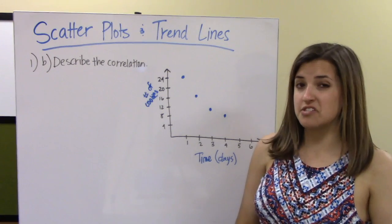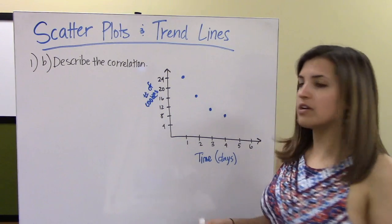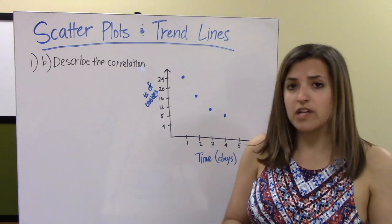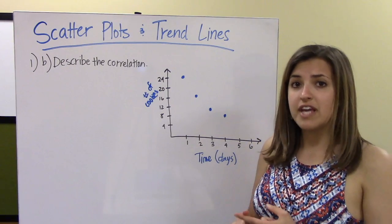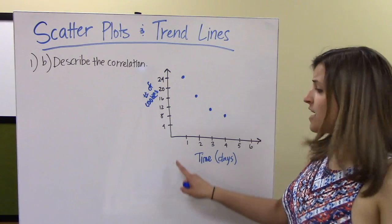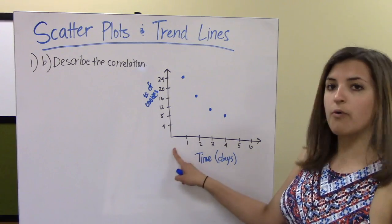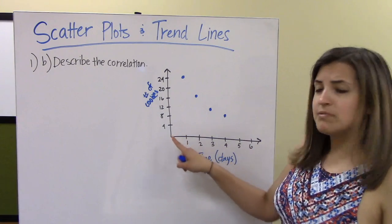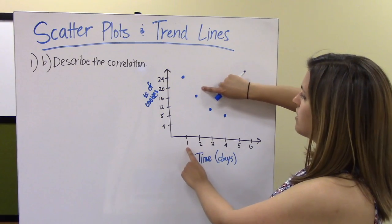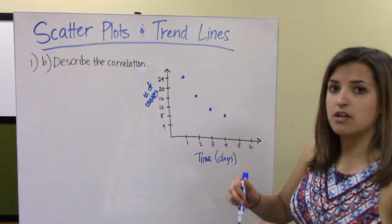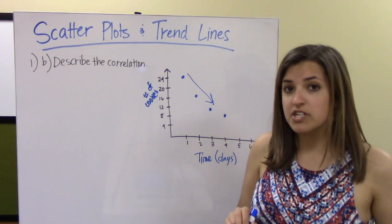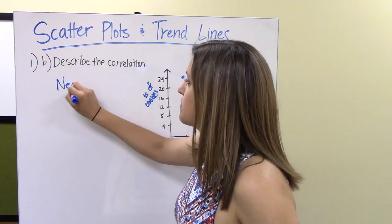In part B, we're asked to describe the correlation between our two variables. Thinking back to what we know, correlation is either positive, negative, or none. As x increases — as we go on in days — the y values get smaller. We have this kind of downward trend, which means our correlation is negative. So we write: negative correlation.